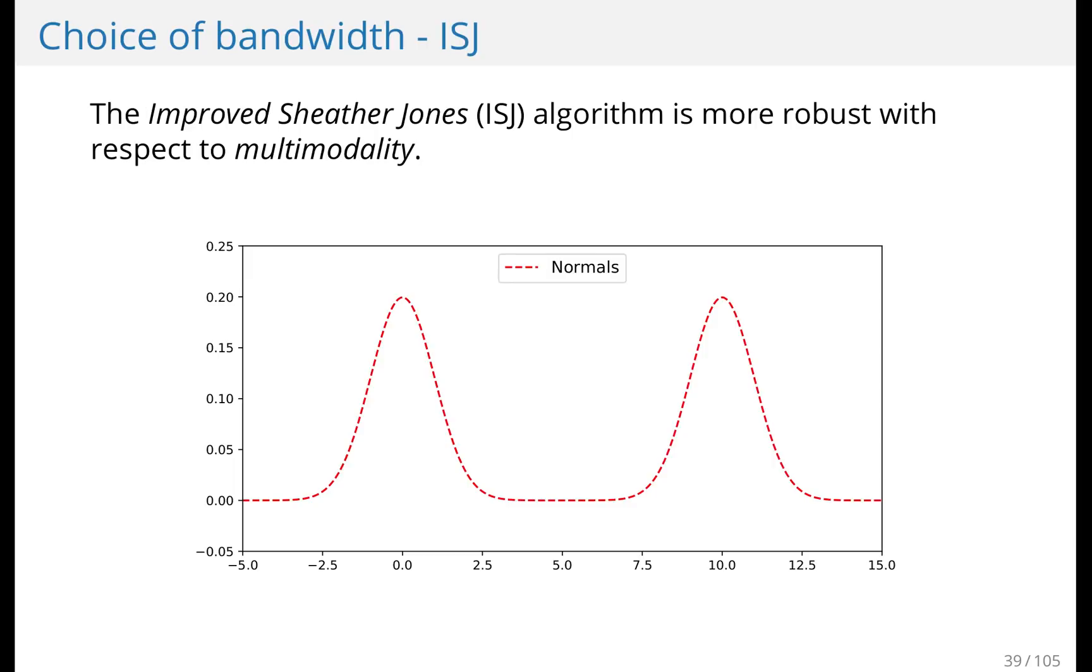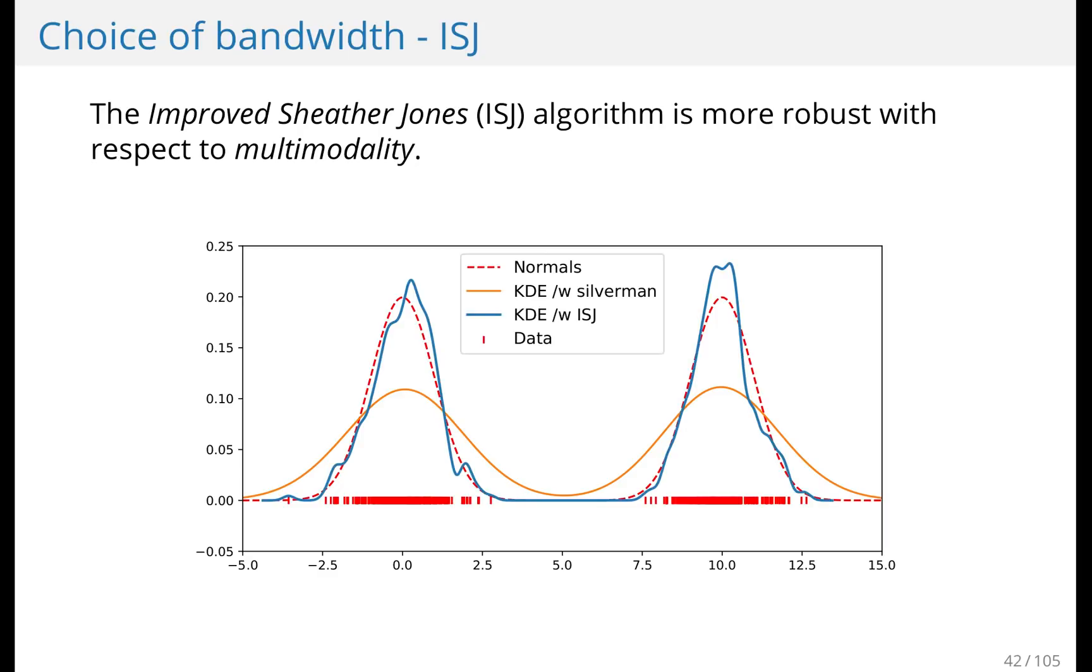There's a different algorithm, which is better if you have a lot of data, or if your data is multimodal, meaning there are several modes. So consider this data, you have two normal distributions, they're spread apart, and we generate some data from this probability density function. We get this data. If we use Silverman's rule of thumb, we end up with a poor estimate, where the bandwidth is too large. If we use the improved Sheather Jones algorithm, we get a far better estimate.